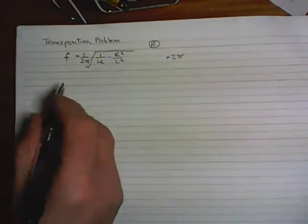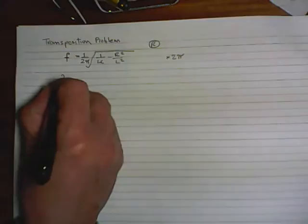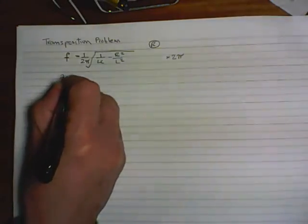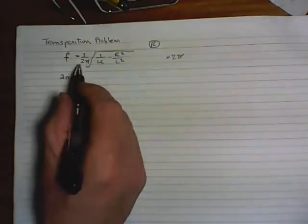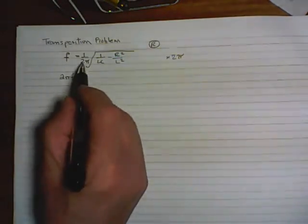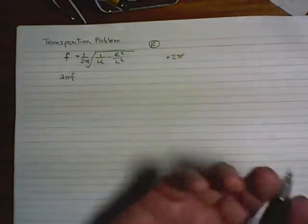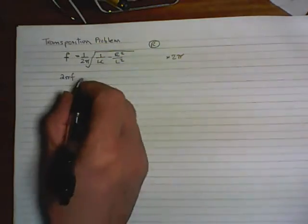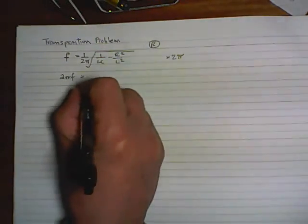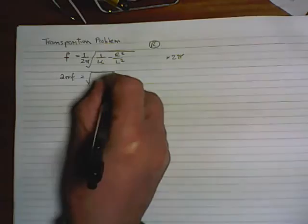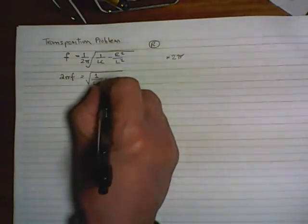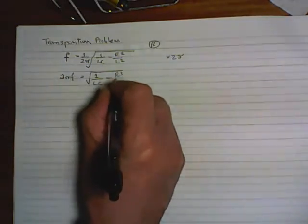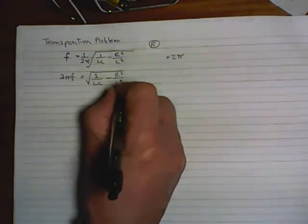So if we multiply both sides by 2π, we should get rid of this fraction here, which is a good thing to do in most cases of transposition problems, get rid of the fraction. So, okay, what are we looking at? We're looking at 2πf. That's 2π times f. We've multiplied it by that. Now, this is now gone because 1 over 2π times 2π is 1, and nothing is left.